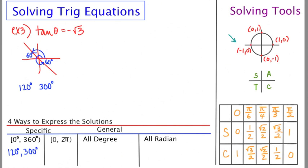But sometimes the author of a question wants the specific radian solutions. That's pretty easy too. We just have to convert these answers to radians. So that's going to be 2 pi over 3 and 5 pi over 3.